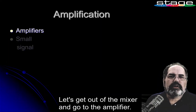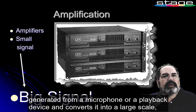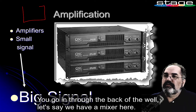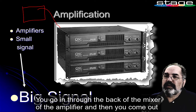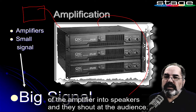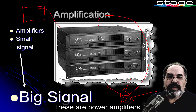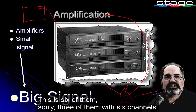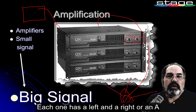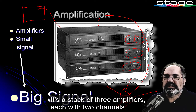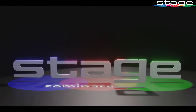Let's get out of the mixer and go to the amplifier. Amplifiers take the small signal generated from a microphone or a playback device and convert it into a large signal that is converted back to sound waves by the speakers. You go in through the back of the amplifier and then come out into speakers, which project sound at the audience. These are power amplifiers — three of them with six channels. Each one has a left and a right, or an A and a B, because it doesn't have to be left and right. So it's a stack of three amplifiers, each with two channels.